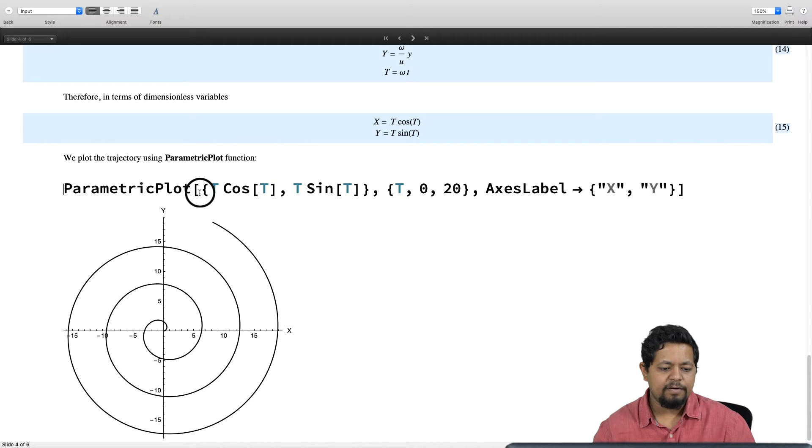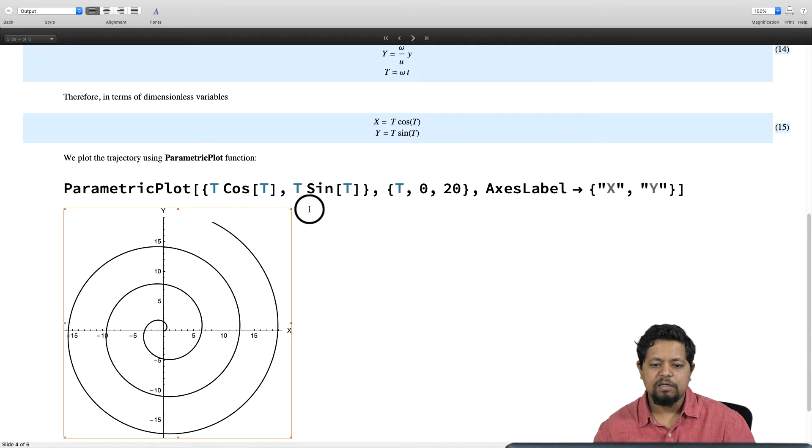ParametricPlot works in the following way: inside curly brackets you give the x coordinate and y coordinate. The x coordinate in this case is t cosine t and y coordinate is t sin t. I am going to make a plot for t from 0 to 20 and label the axes as x and y.